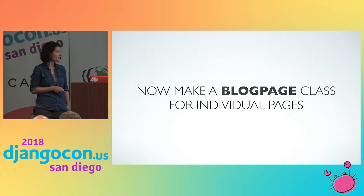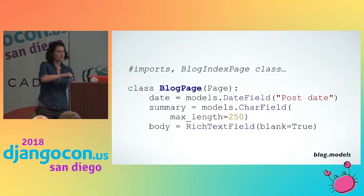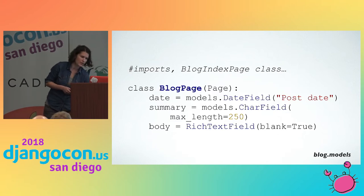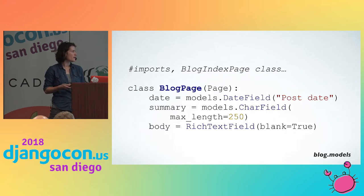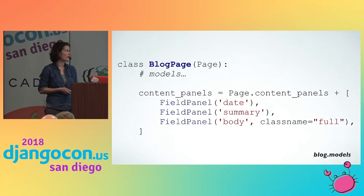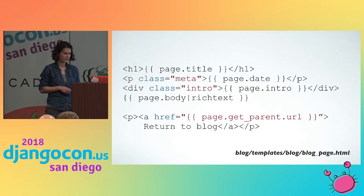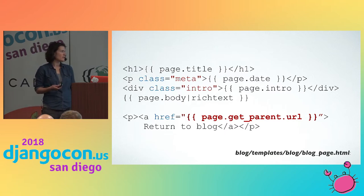Now we're going to make a BlogPage class for individual posts displayed on the blog index page. This goes beneath your BlogIndexPage — a simple class called BlogPage, title case, the last word has to be page, inherits from Page. We make models that make sense for a blog: date, summary, body. Below that we add our content panels to make sure it shows up in the Wagtail admin, and then we make our template. In the blog page template, you can use page.get_parent to get the parent URL — a really easy way to return to the blog category.